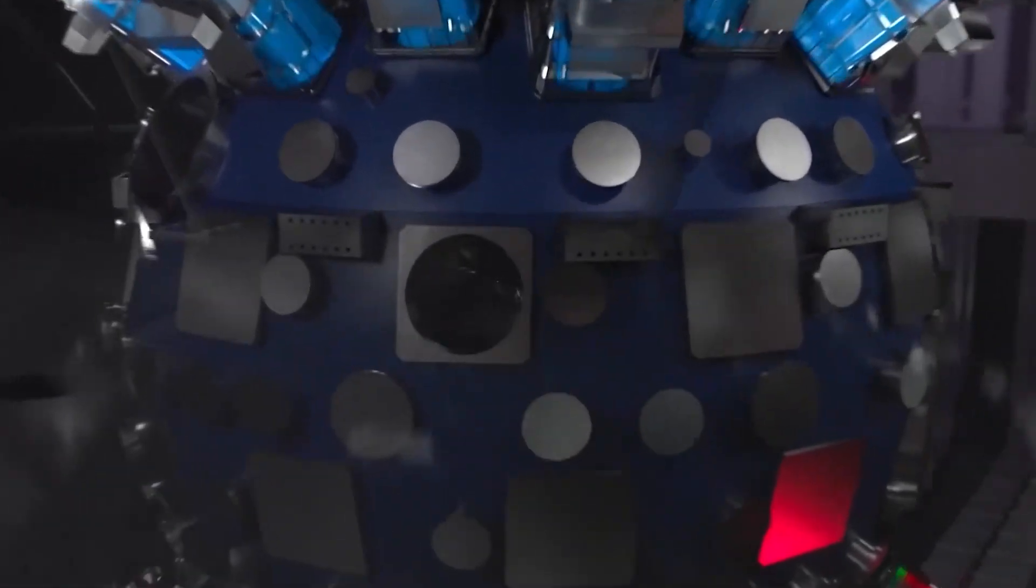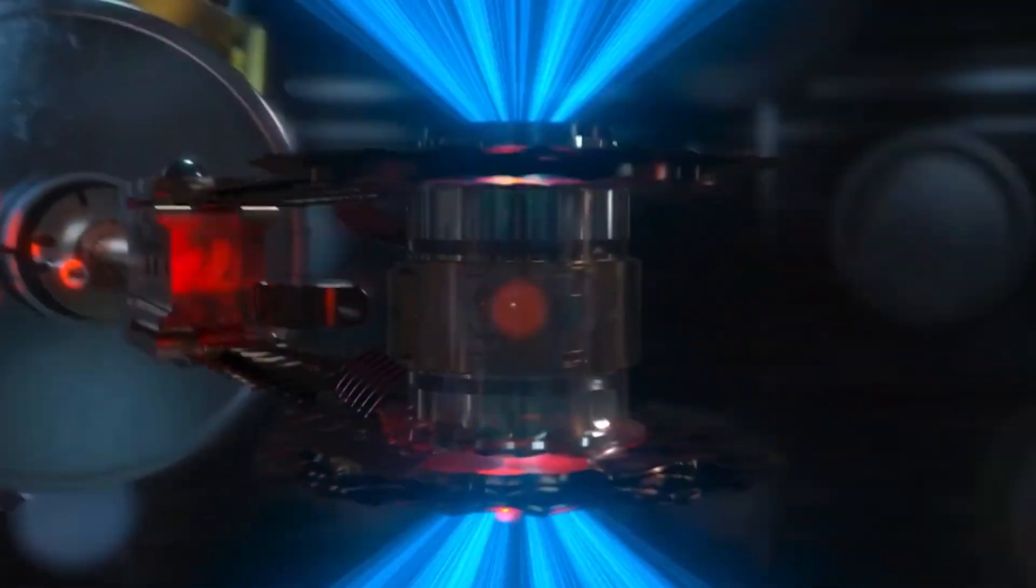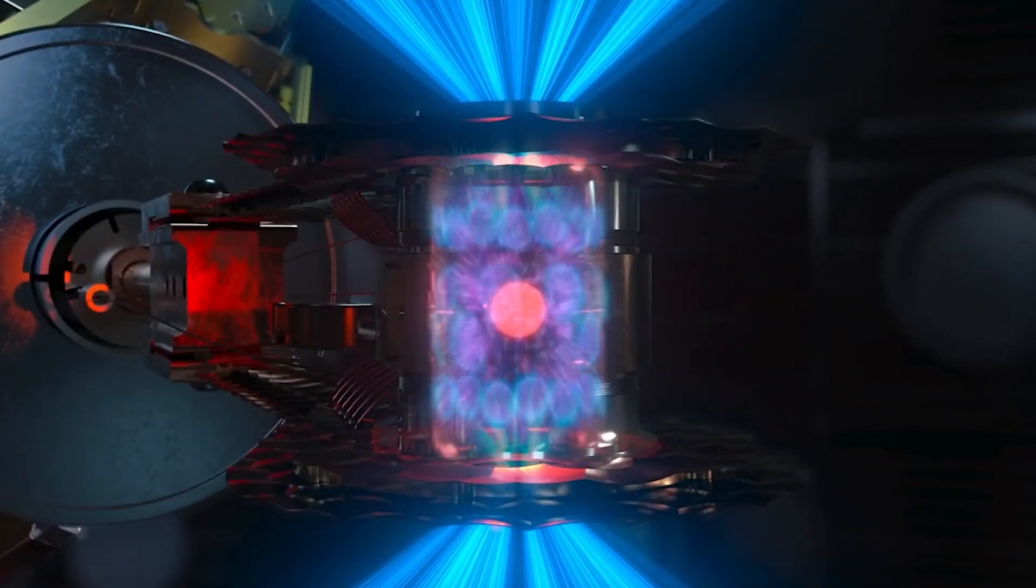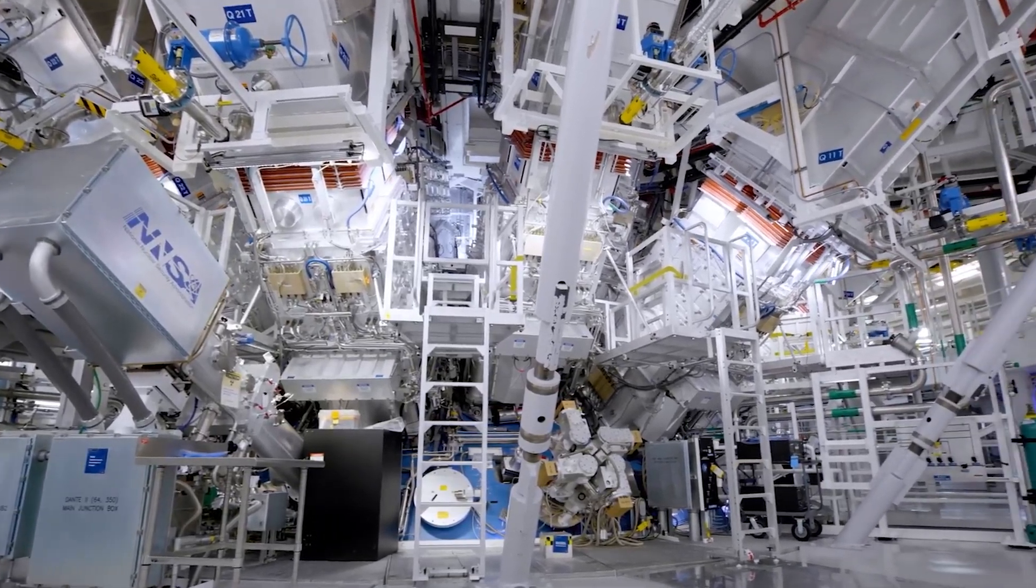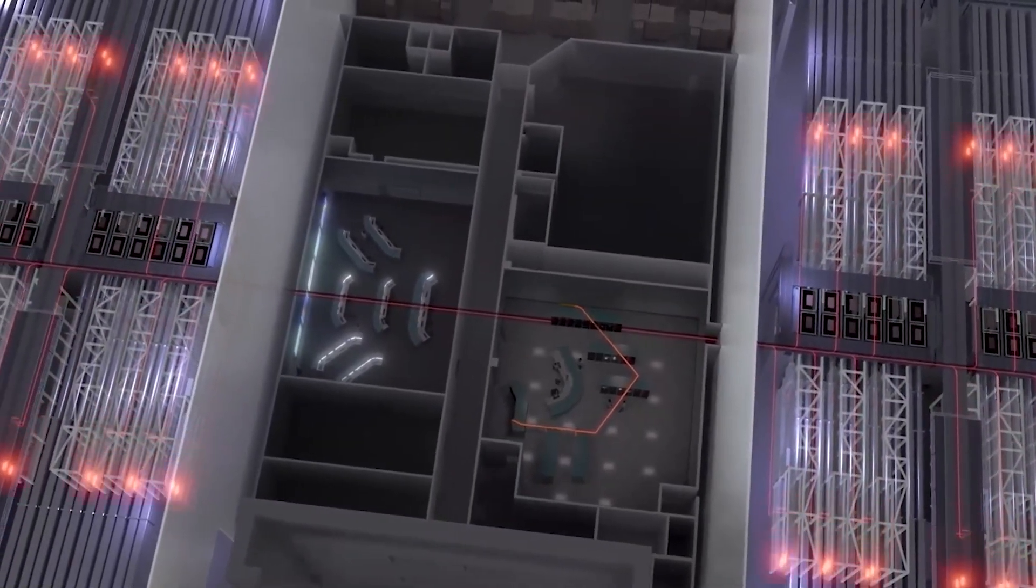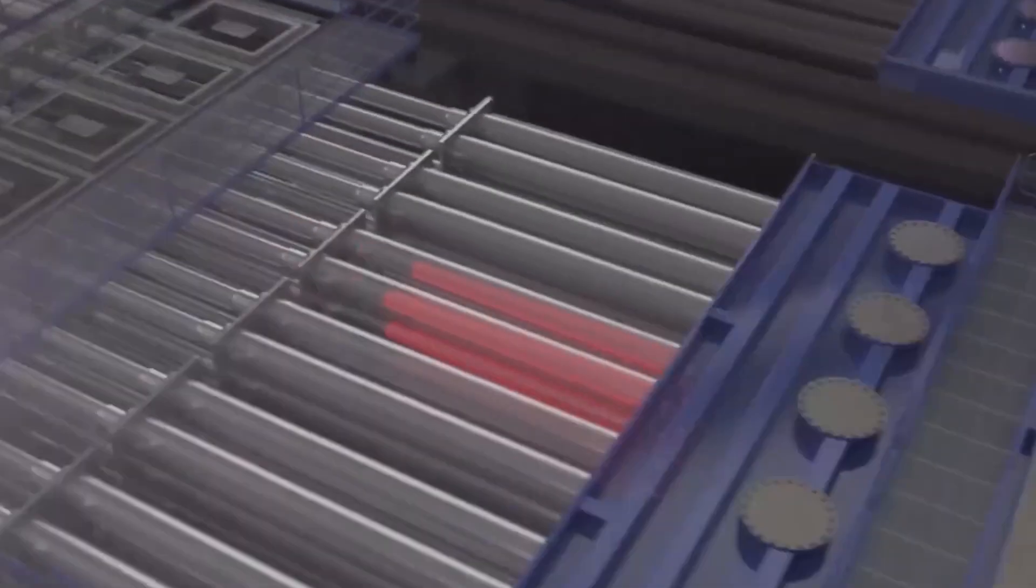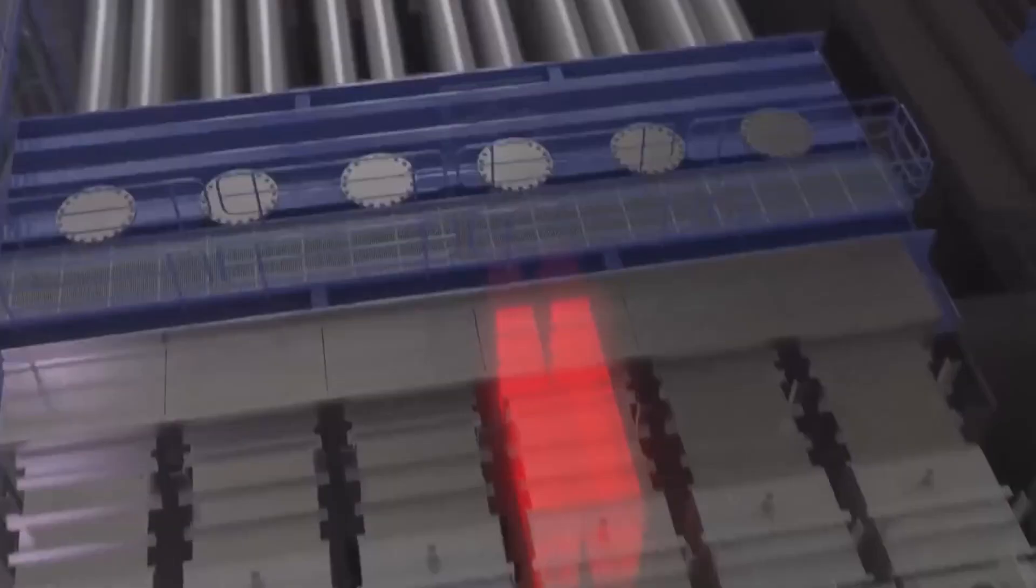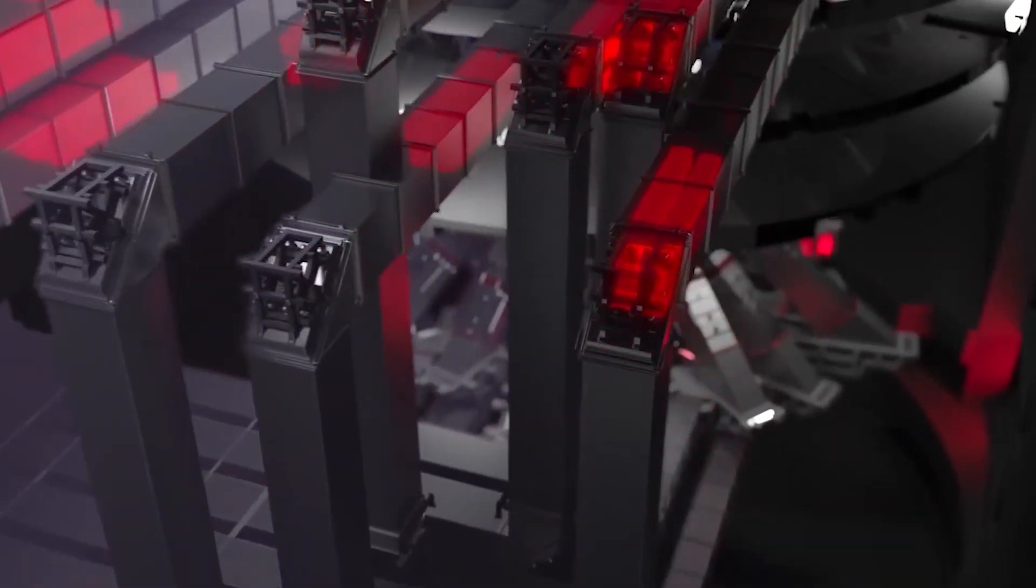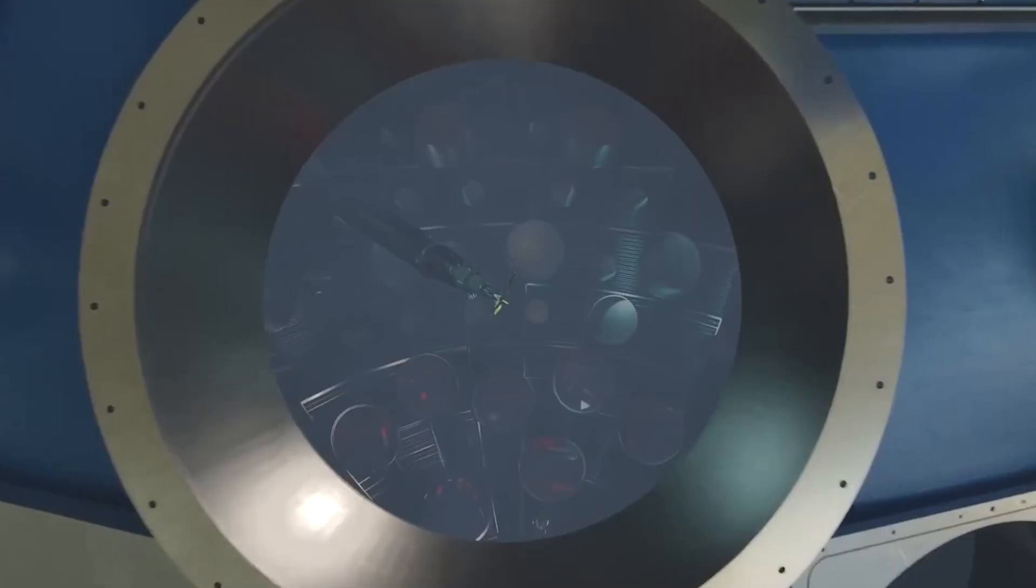Once the fusion fuels transition into the plasma state, the next phase involves adding energy to create the conditions required for fusion reactions. Helion Energy employs a remarkable combination of electromagnets and capacitor banks to achieve this crucial objective. The electromagnets are responsible for running large currents, often in the order of millions of amps, through the fusion fuel. This current generates immense magnetic fields that compress and heat the plasma, a pivotal step towards achieving fusion. To provide the required mega amp of current, capacitor banks are charged with electrical energy for a few seconds, followed by a rapid discharge of this stored energy into the electromagnets wrapped around the fusion device.